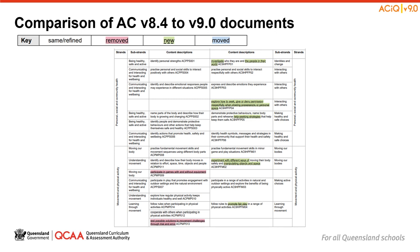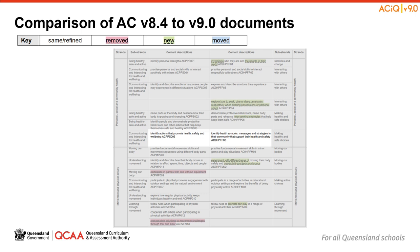Shown on screen is a snip of the Prep document, which shows how the changes are colour-coded. If something has been refined from Version 8.4, it may not be colour-coded and therefore careful consideration is needed. For example, in Version 8.4 the content description was 'identify actions that promote health, safety and well-being', whereas in Version 9.0 it states 'identify health symbols, messages and strategies in their community that support their health and safety'. If something has been removed from Version 8.4 and no longer appears in Version 9.0, it will be colour-coded red — for example, 'test possible solutions to movement challenges through trial and error' has been removed.